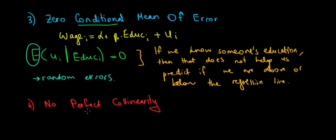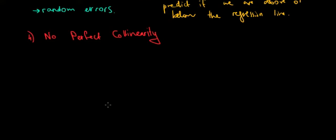Now the other one is no perfect collinearity. What does it mean collinearity? In simple words it means on the same line. Collinear. So we don't want to have two variables that can be described by each other.